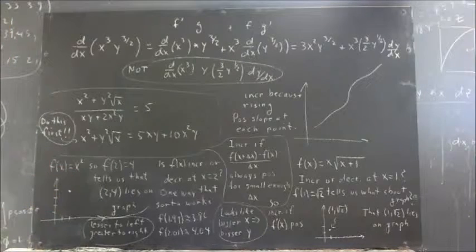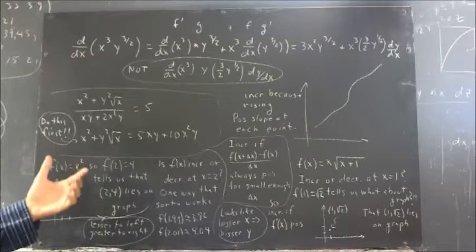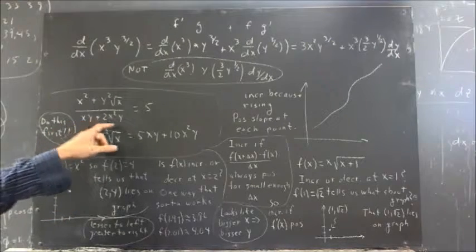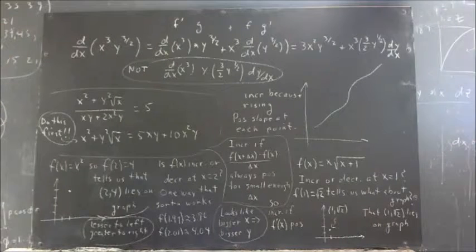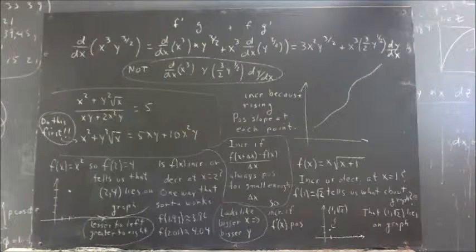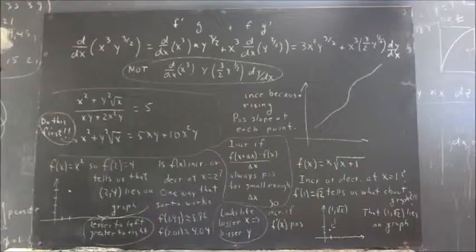Now, the one thing you do have to be careful of there is when you do this, you're excluding the values that make this expression zero. So you do want to be careful about that. But otherwise, everything works out very nicely.